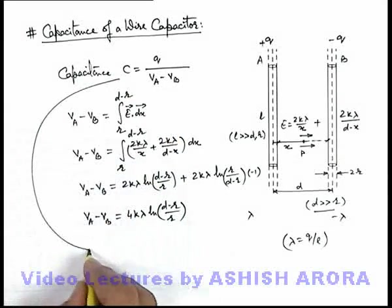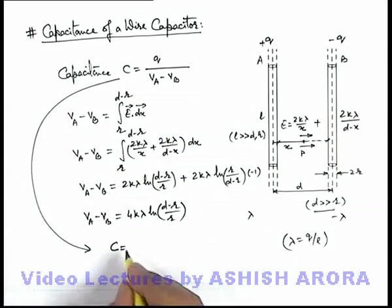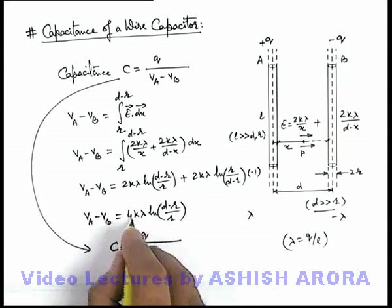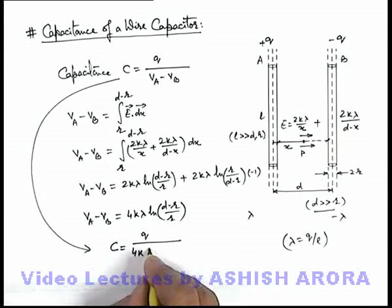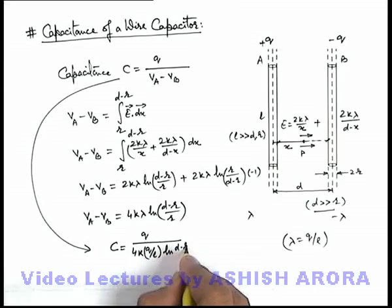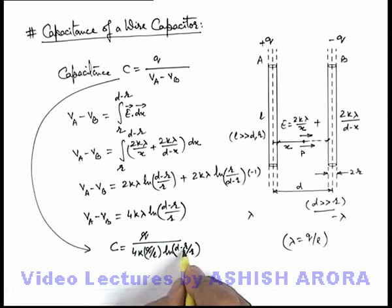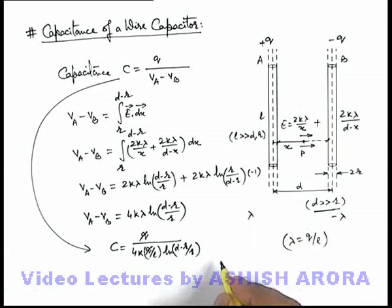Then using this relation we can find out the capacitance of such a system, which is q divided by the potential difference 4k lambda. Lambda we can write as q by l is ln of d minus r by r. Q gets cancelled out and if we ignore this r compared to d because d is very very greater than r.